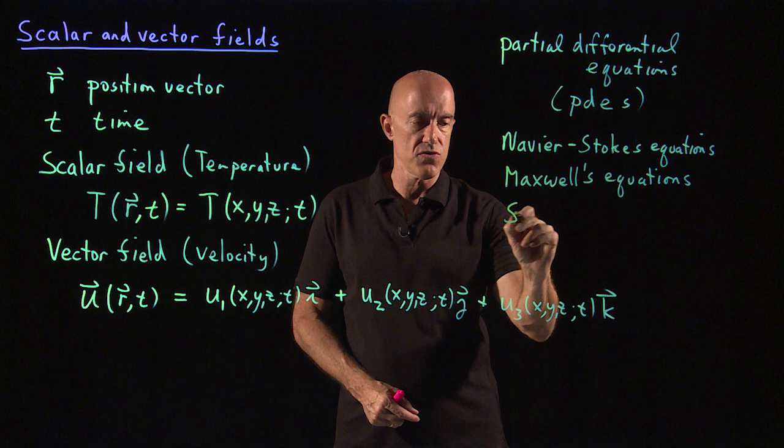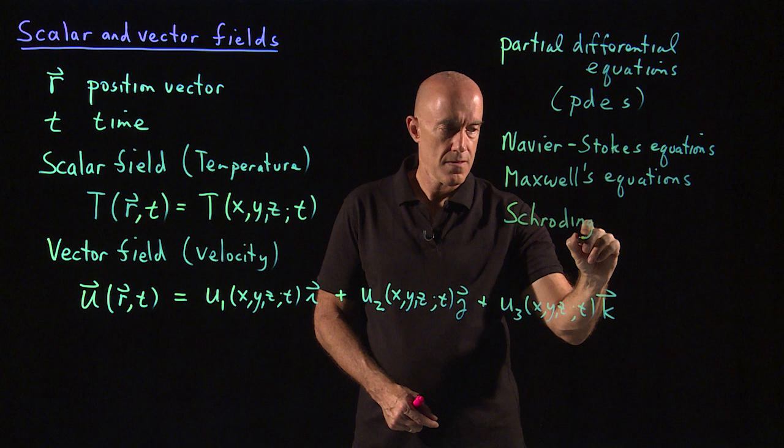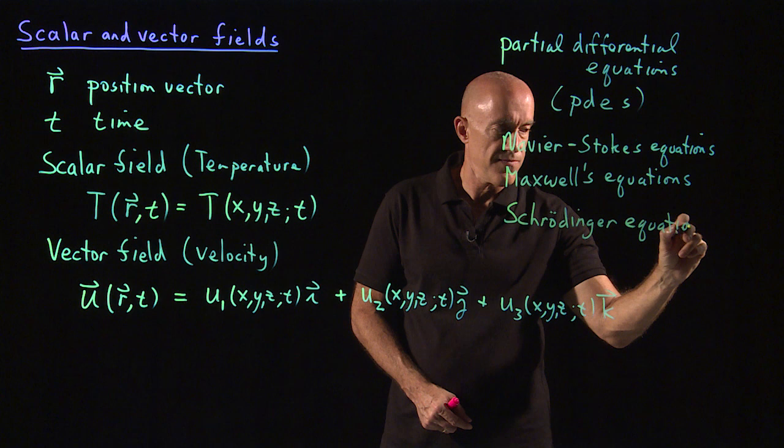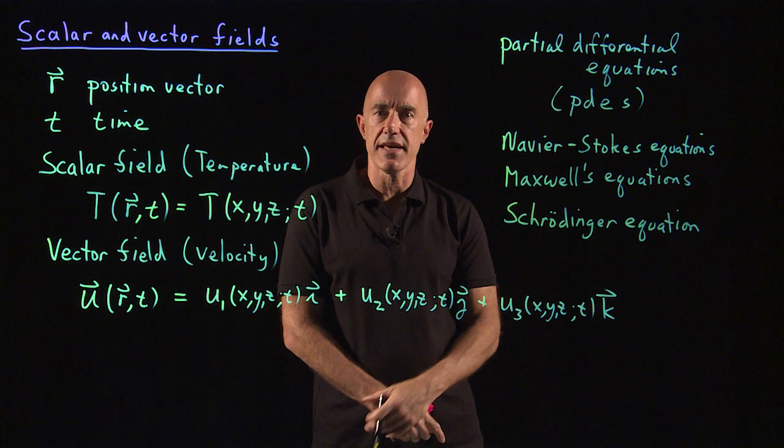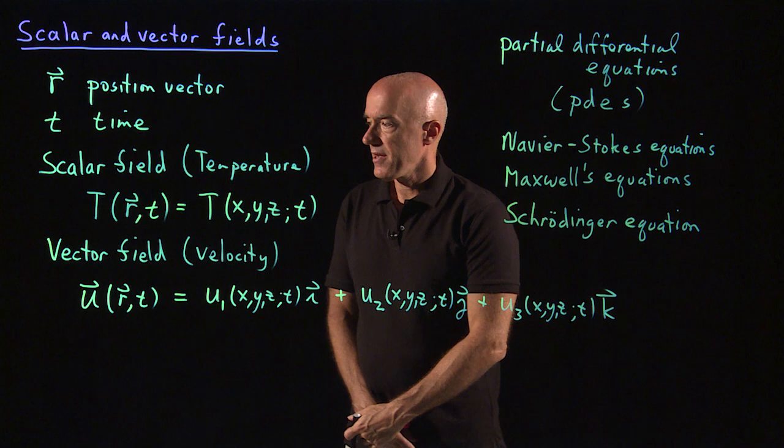Or it could be something called the Schrodinger equation. This is an equation for what's called non-relativistic quantum mechanics. The chemical engineers need to learn about this. It's for a scalar field that's called the wave function.